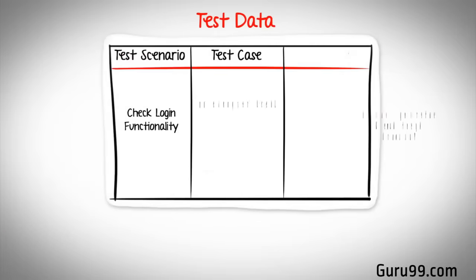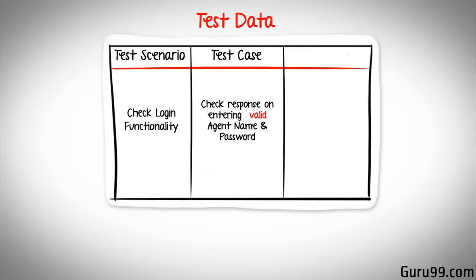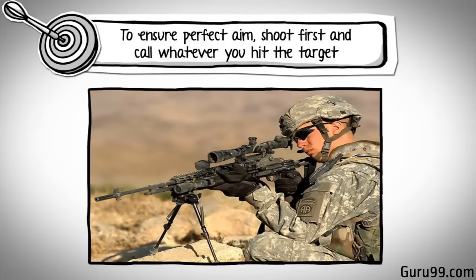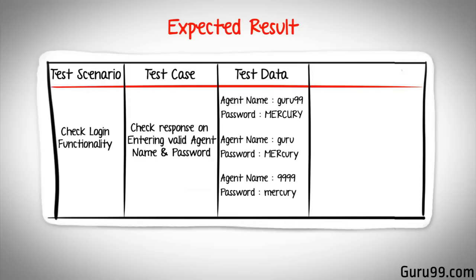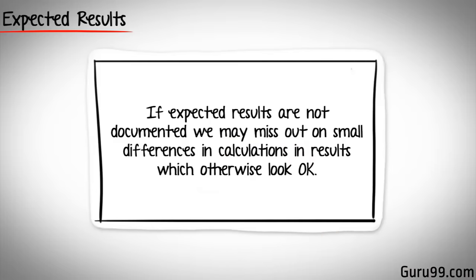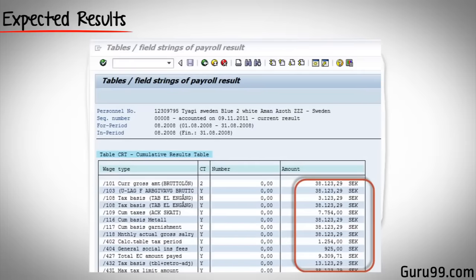Consider the test case: check response on entering a valid agent name and password. It's obvious that this test case needs input values — agent name and password. This is nothing but test data. Identifying test data can be time consuming and may sometimes require creating test data afresh, so it needs to be documented. Your test case must also have an expected result. For our test case, the expected result would be: login should be successful. If expected results are not documented, we may miss out on small differences in calculations or results that otherwise look okay.